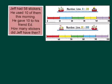Okay, now let's look at the key words that tell us we're going to use subtraction. Jeff had 58 stickers. He used 10 of them. So use tells us that some have gone away. He gave, so gave is the other key word that tells us that some have been taken away.